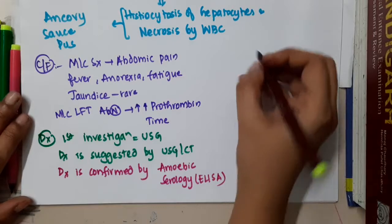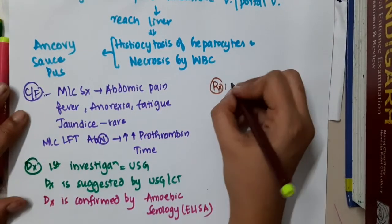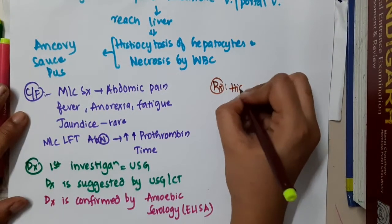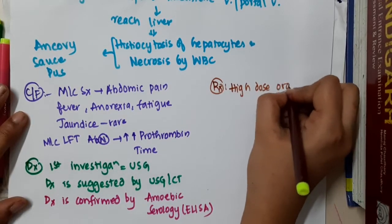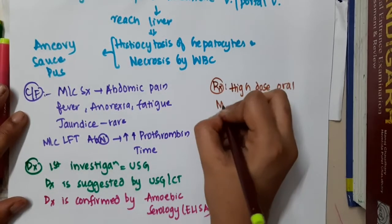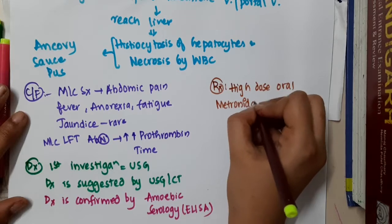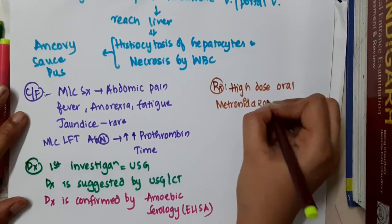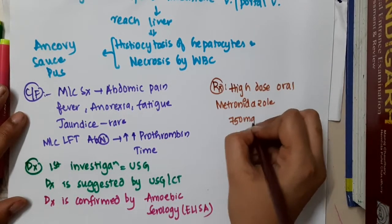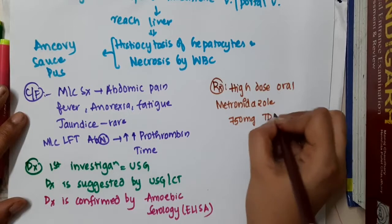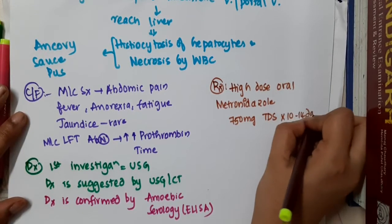Amoebic liver abscess is treated by giving high-dose oral metronidazole — 750 mg TDS — given for 10 to 14 days.